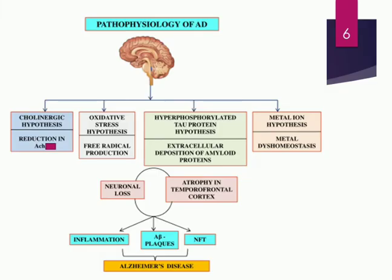There are four postulated hypotheses that can lead an individual to develop Alzheimer's disease. The first is the cholinergic hypothesis — a reduction in acetylcholine neurotransmitters due to over-activity of acetylcholinesterase enzyme. The second is the oxidative stress hypothesis — free radical production due to oxidative stress can damage neurons and produce plaques or tau protein NFTs. The third is hyperphosphorylated tau protein synthesis, which leads to deposition of tau tangles, to be discussed in the following slide.